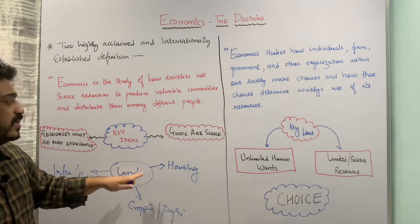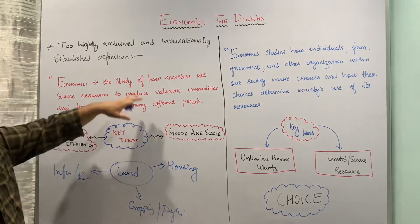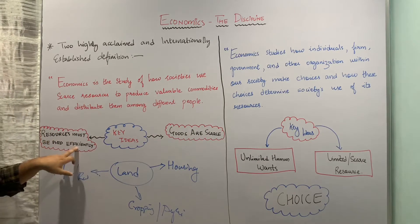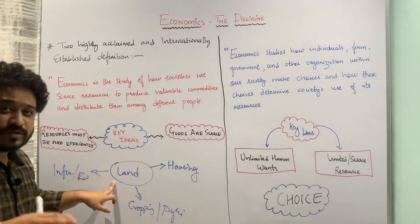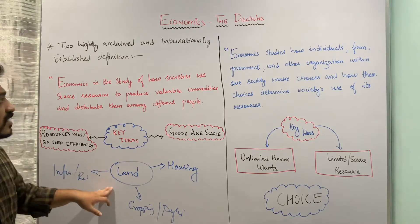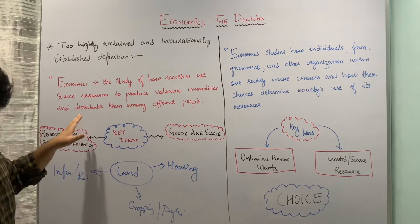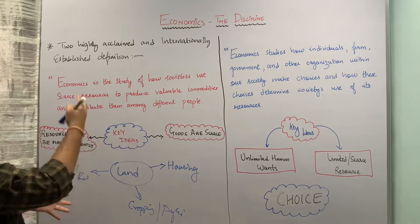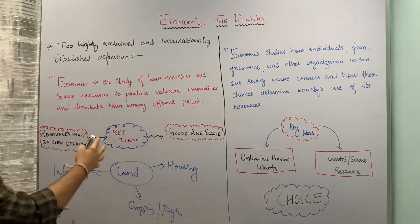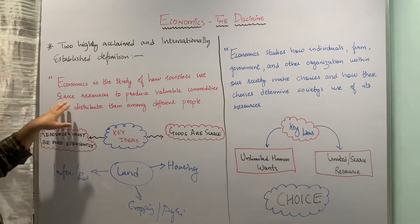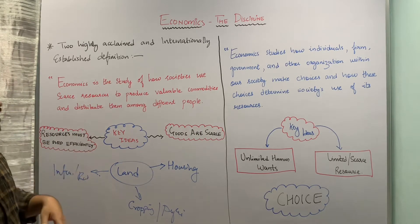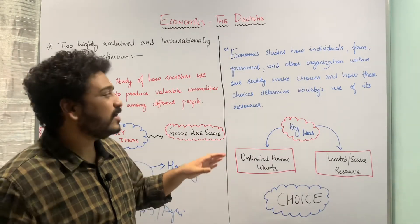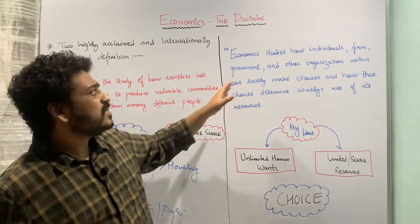So there are different uses to this scarce resource, which is used to produce commodities that are also scarce. This definition talks about how a society uses scarce resources efficiently — you have limited land, you have to use it such that it produces valuable commodities that can be distributed among different people across nations and humanity. Let us now look at the second definition.